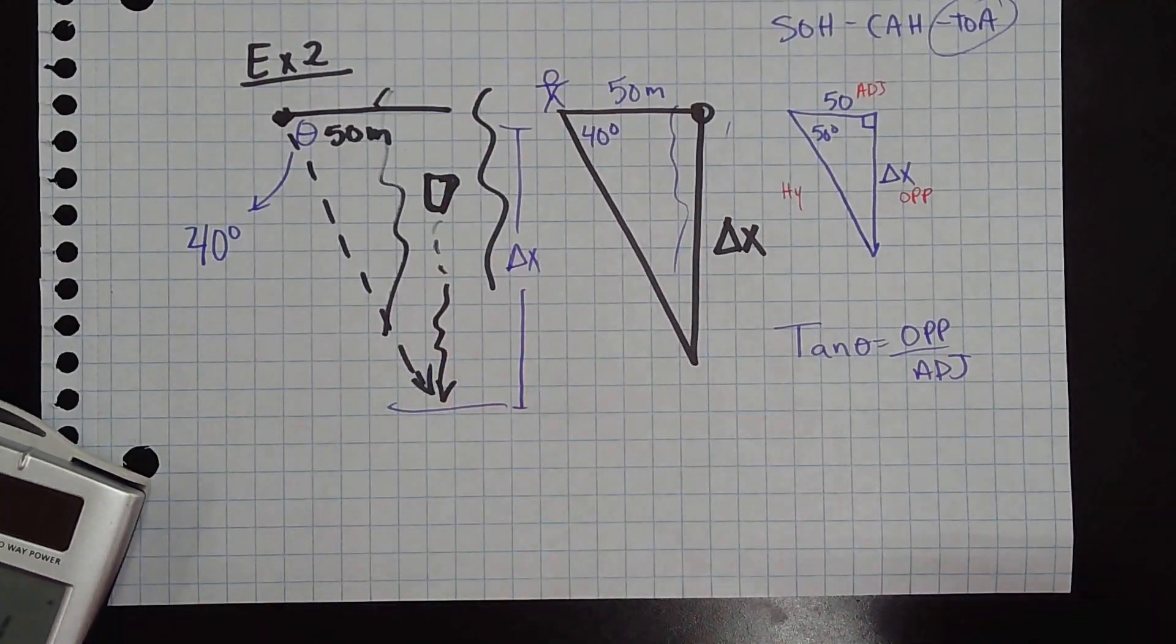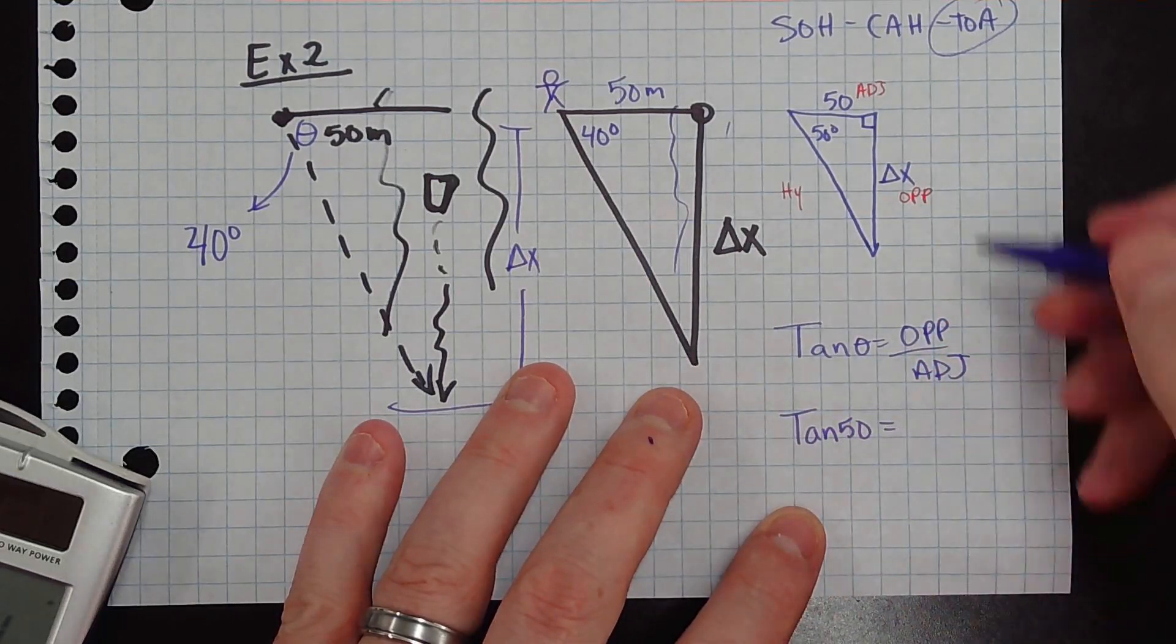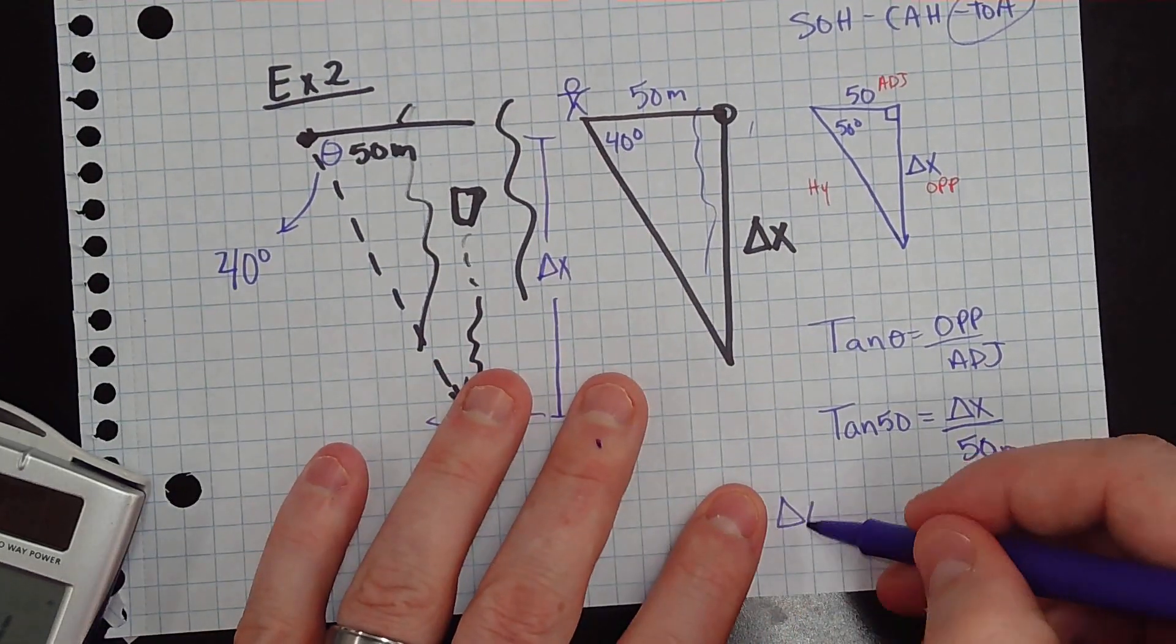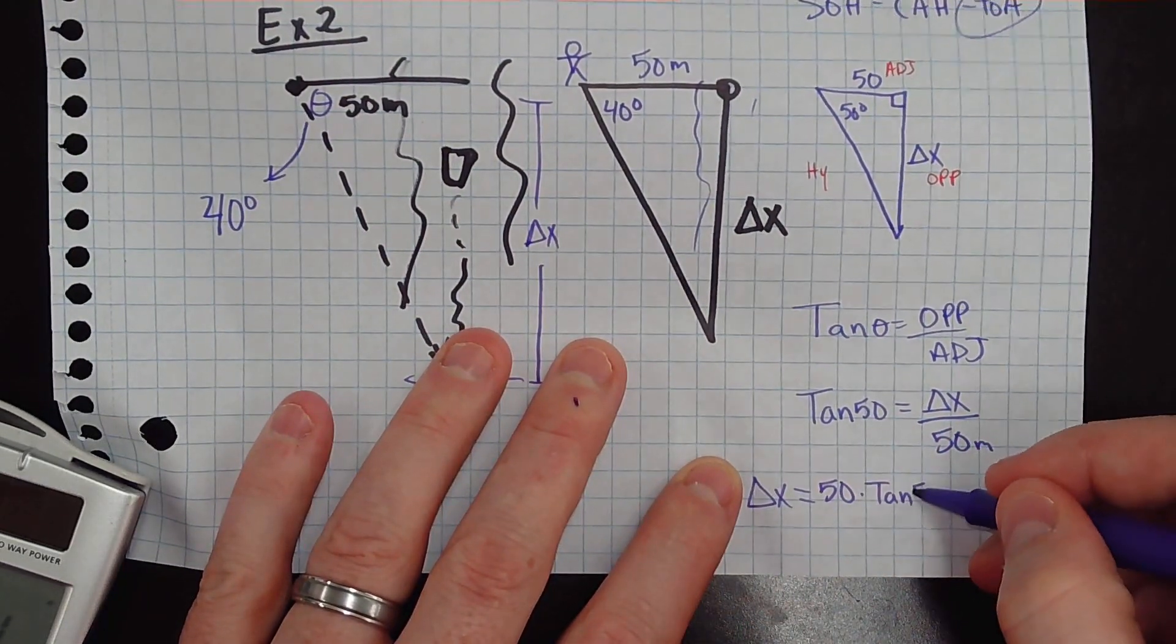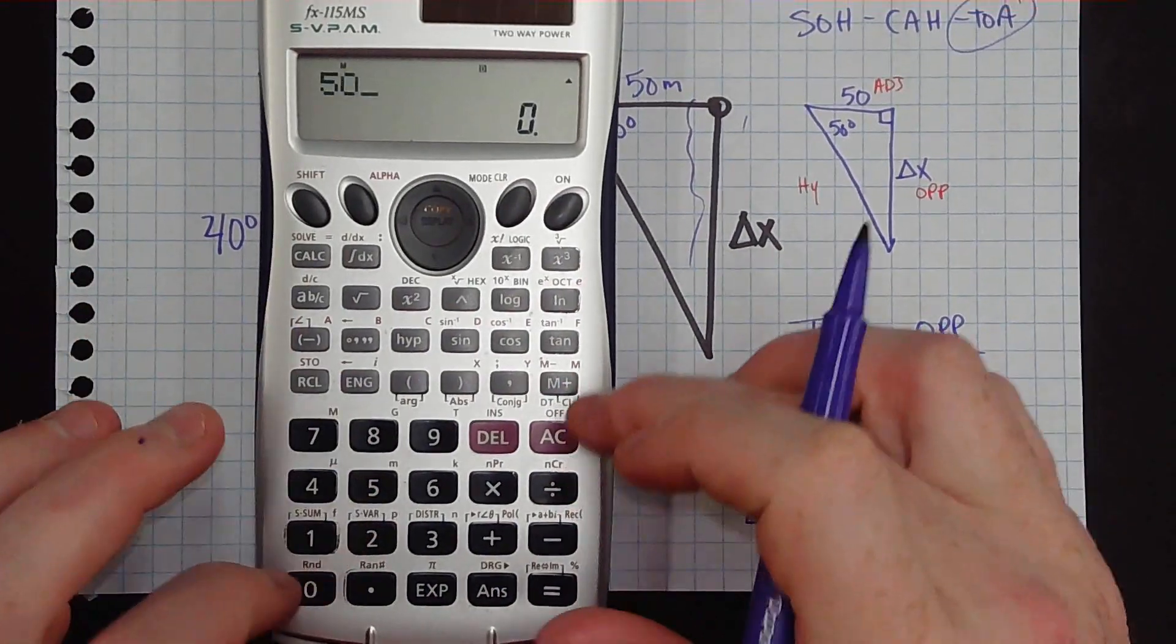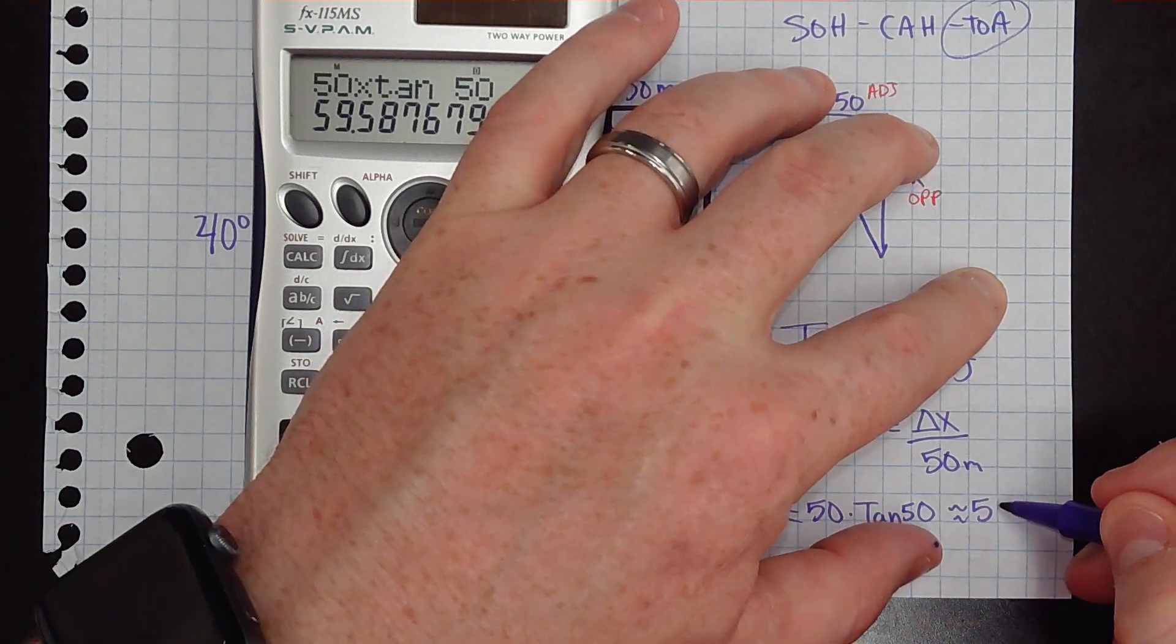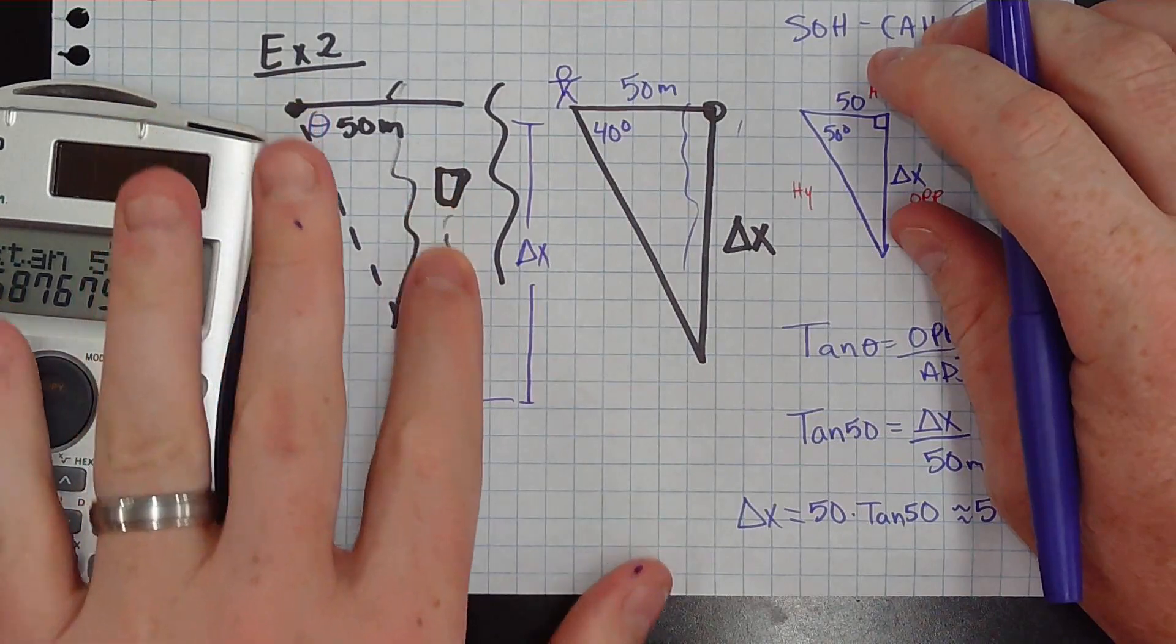Now, how am I going to use this? Well, you just plug in your variables you found. Tan of 50 equals the opposite, which is what I'm looking for, over my adjacent, which is 50 meters. So, solving for delta X, that gives me 50 times tan of 50. And you just plug this into your calculator. 50 times tan of 50 gives me right at approximately 59.6 meters. So that is how far down the river the boat actually traveled. So you can apply this to numerous things.